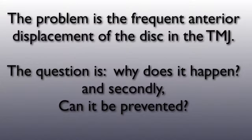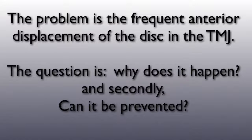For the purpose of simplicity in this discussion, we will talk about one TMJ. It is understood that there are two and that motion in one joint certainly affects motions in the other joint. The problem is the frequent anterior displacement or dislocation of the disc. The question is: why does it happen, and can it be prevented?